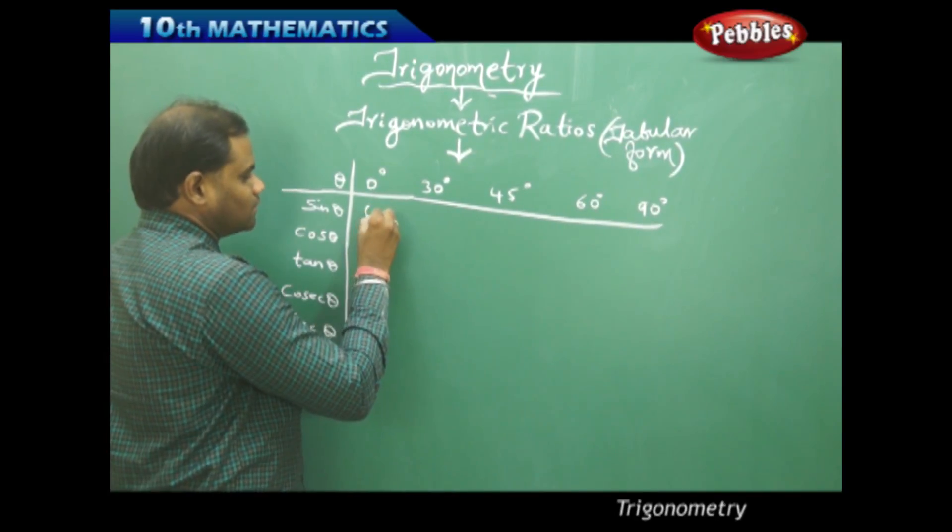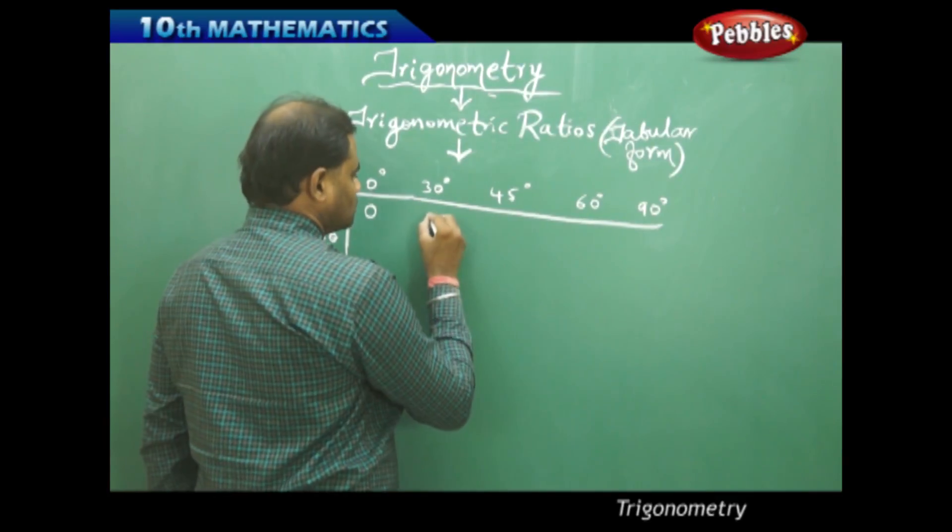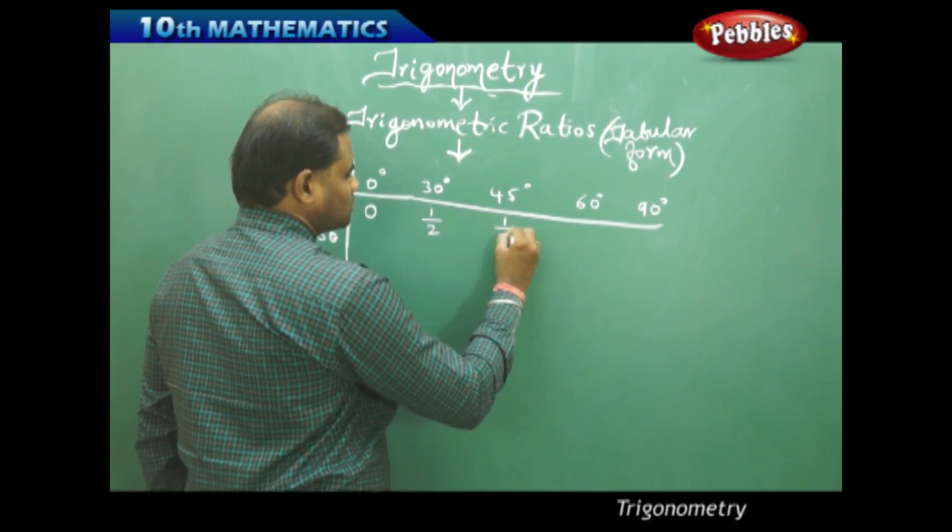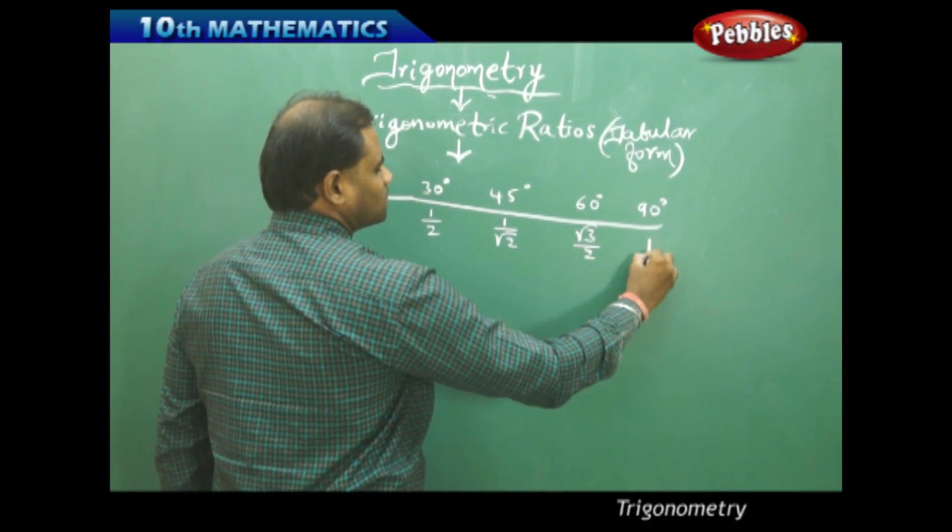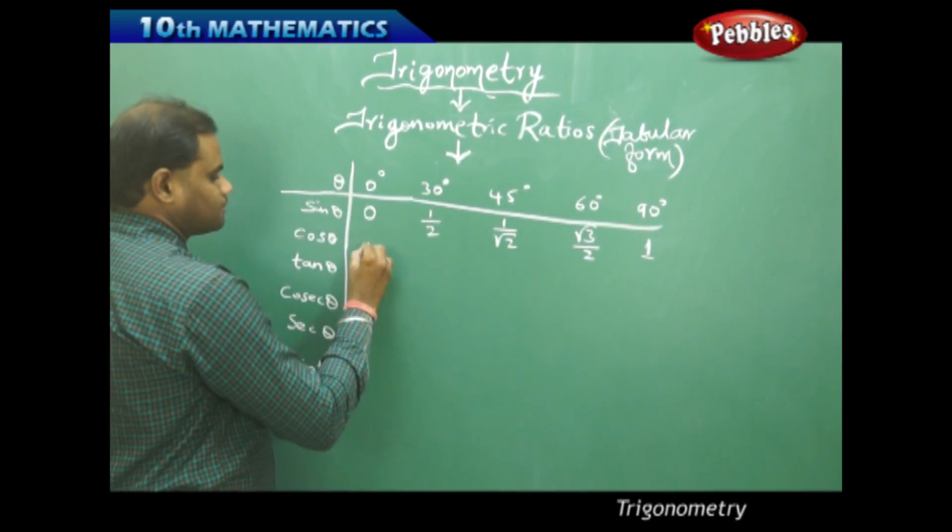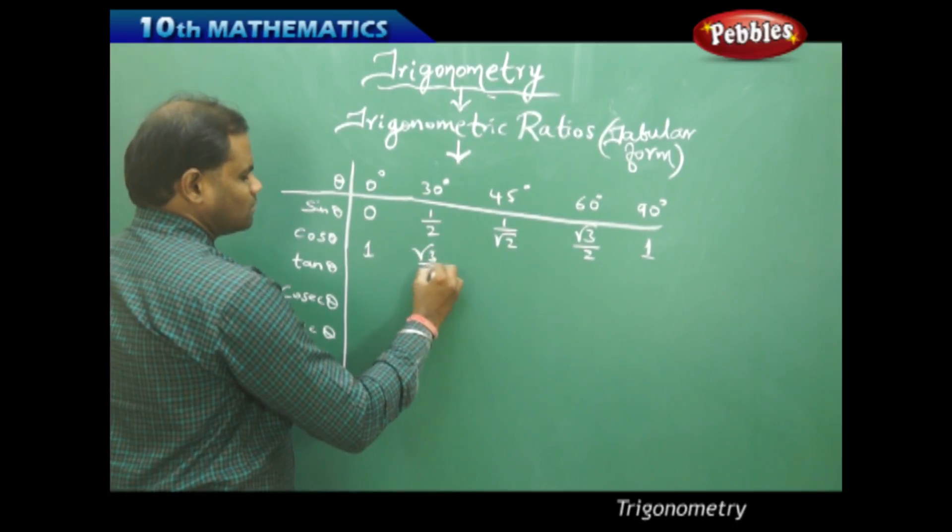So first I have 0, 1 by 2, 1 by root 2, root 3 by 2 and 1.